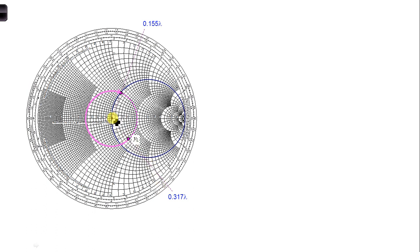So if you draw a straight line from the center of the Smith chart through YL out to the outside of the Smith chart, you're going to cross the wavelengths towards the generator scale. We can read off that value as 0.317, and that's in wavelengths, so it's lambda.